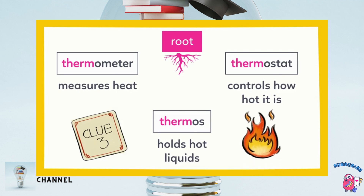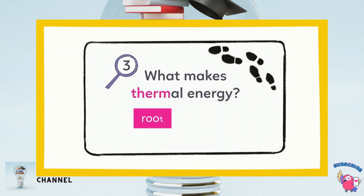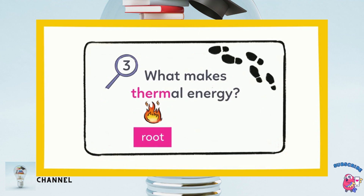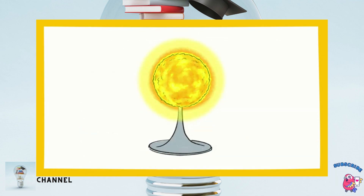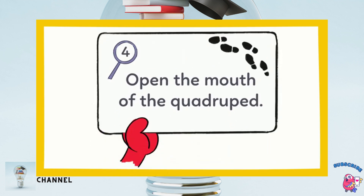All of the definitions say heat or hot, so back to our clue — something that makes thermal energy makes things hot. It's the sun! Here's a model. Let's look under it to find our next clue. While we do that, practice using definitions for root words on your own.